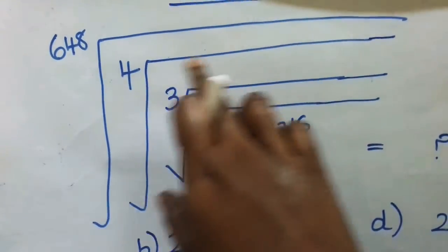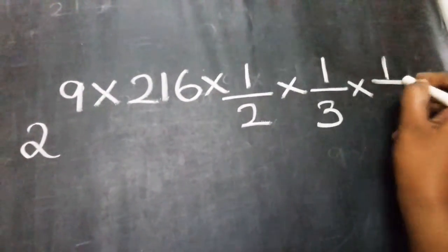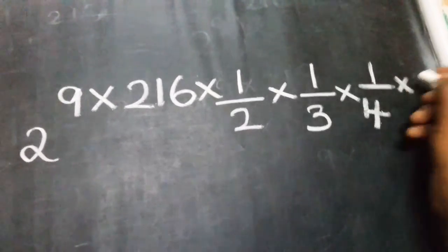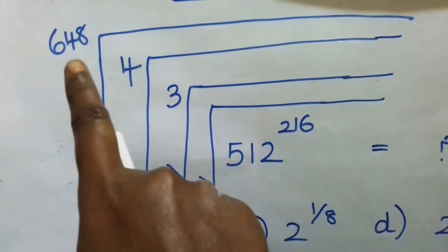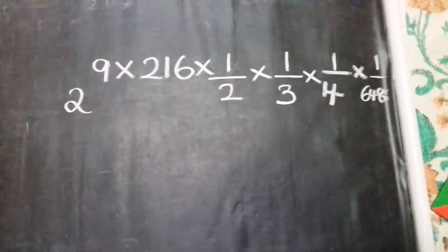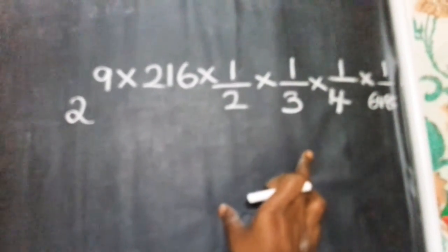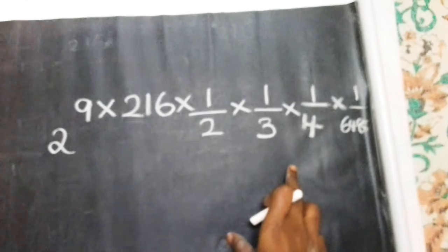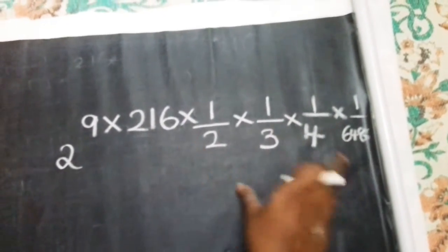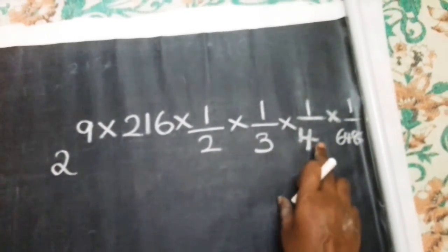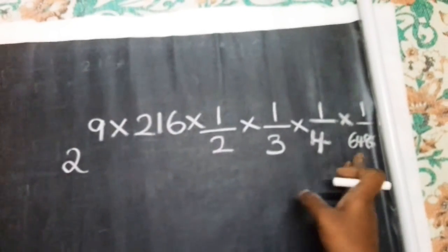When we take a root, the index goes to the denominator — so for fourth root it is 1/4. For the next root of 648, it becomes divide by 648. So when we see a root, the number in the root index comes as the denominator in the power — giving us 2, 3, 4, and 648.